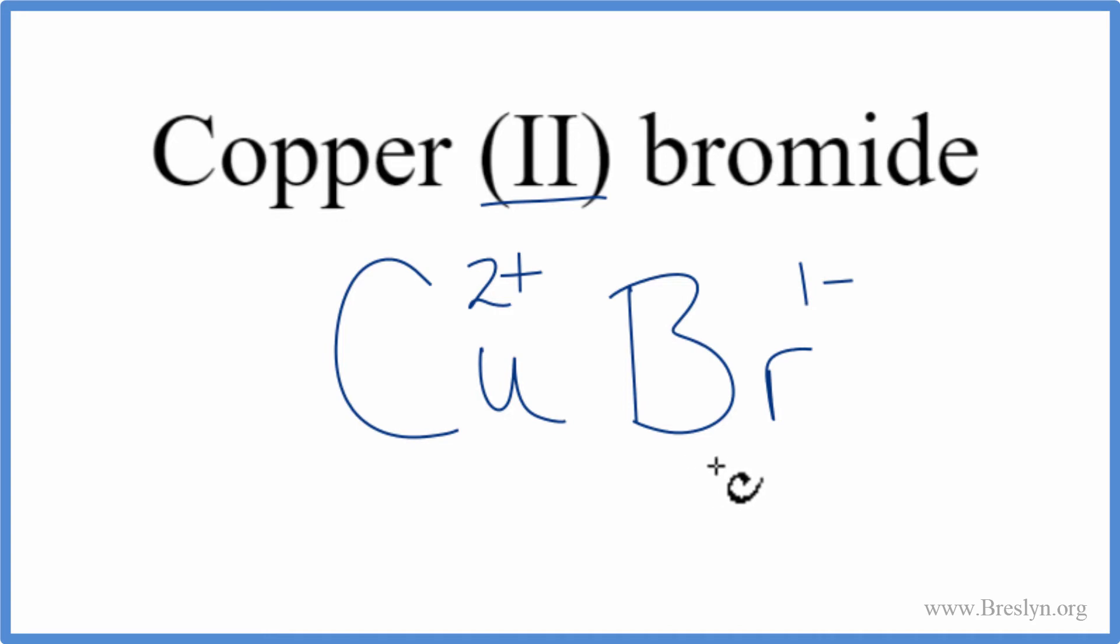So these should add up to zero since it's an ionic compound and they don't. We can change these subscripts here though to make that happen. And we'll use the crisscross method. We move the one over here and the two over here. The one we don't write by convention. Let's get rid of this. And that's the formula for copper two bromide.